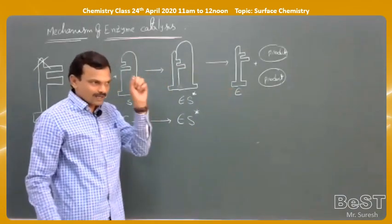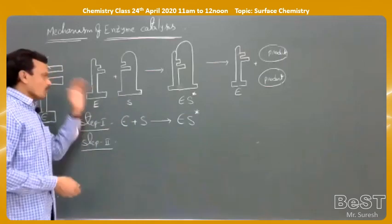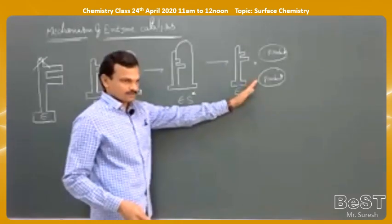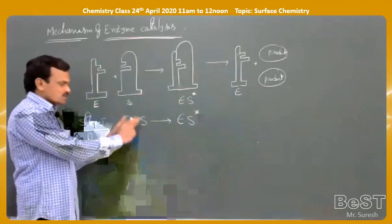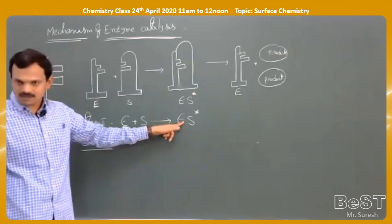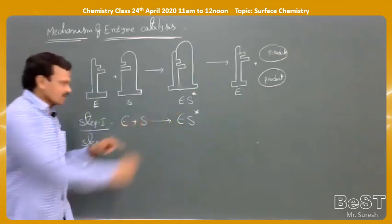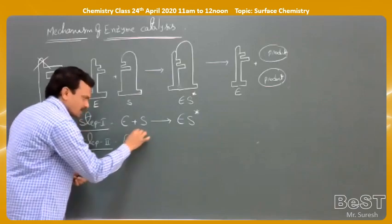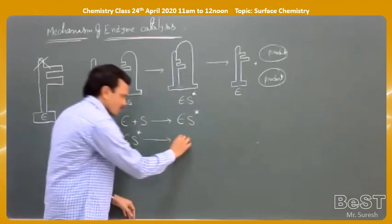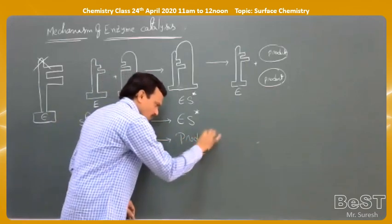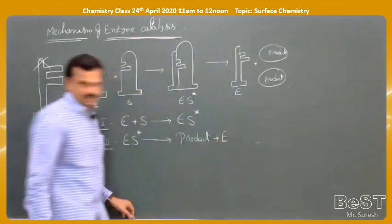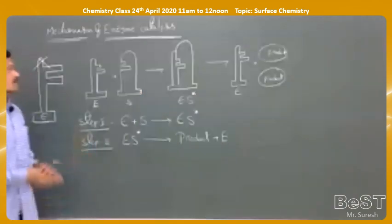In one second, the enzyme can convert a large number of reactant molecules to product molecules. The first step is: enzyme binds to substrate to form enzyme-substrate complex. The second step is: the enzyme-substrate complex decomposes to give one or more products plus the enzyme in its original state. This is the mechanism of enzyme catalysis.